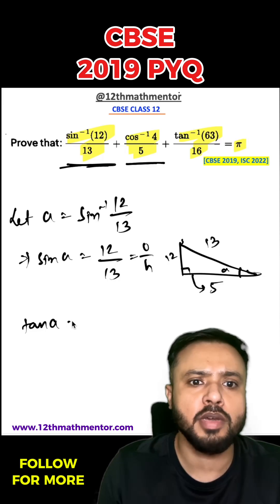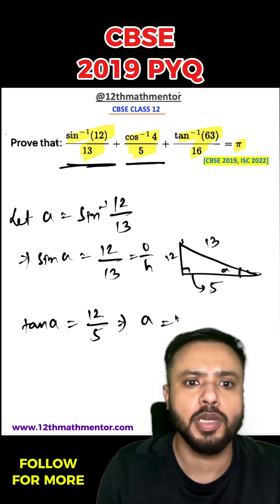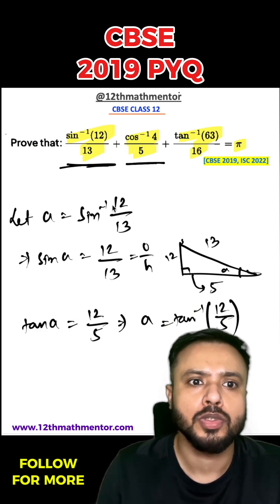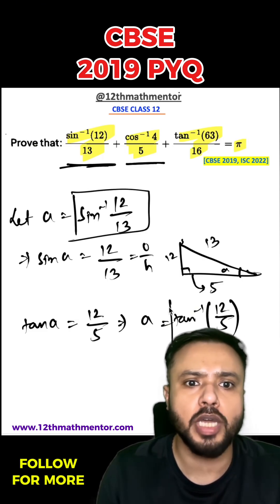Hence I can say that tan A would be equal to opposite upon adjacent, which is 12 upon 5. So from here I can say that A will be equal to tan inverse 12 by 5. So sin inverse 12 by 13 equals tan inverse 12 by 5.